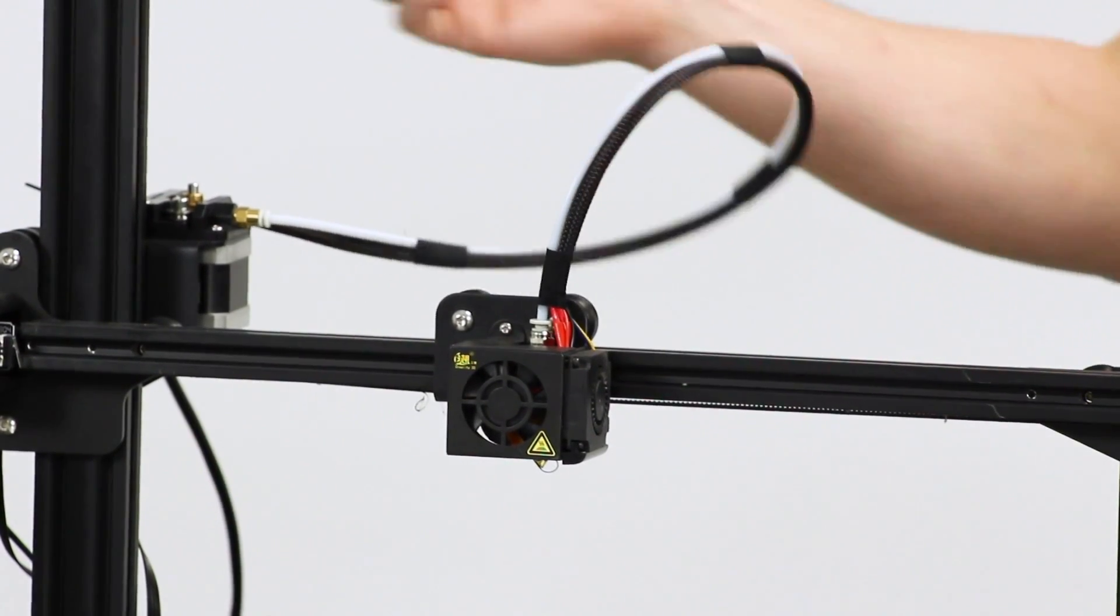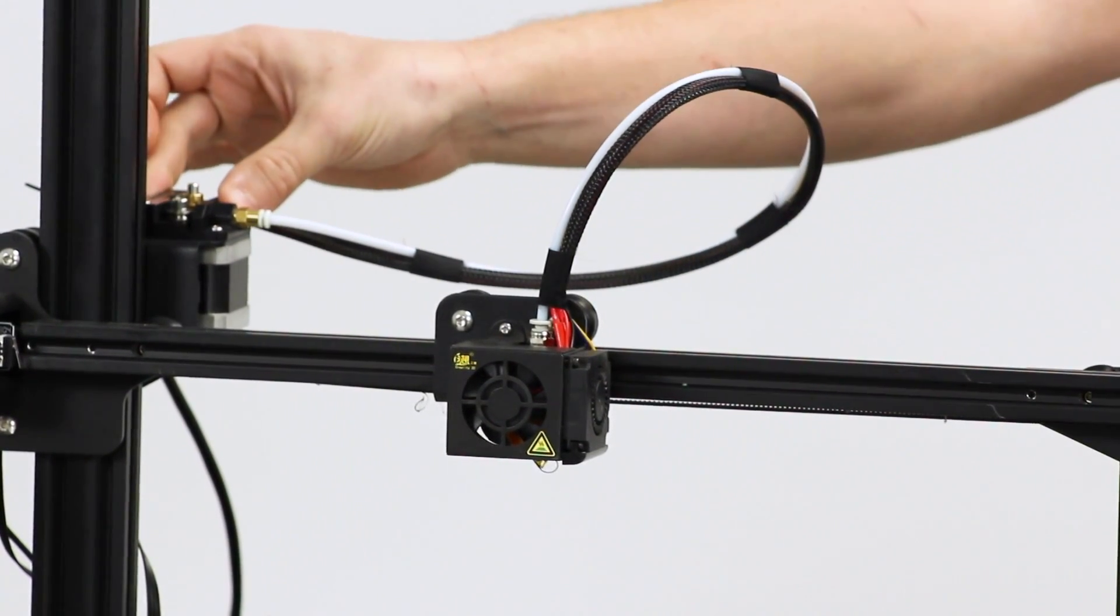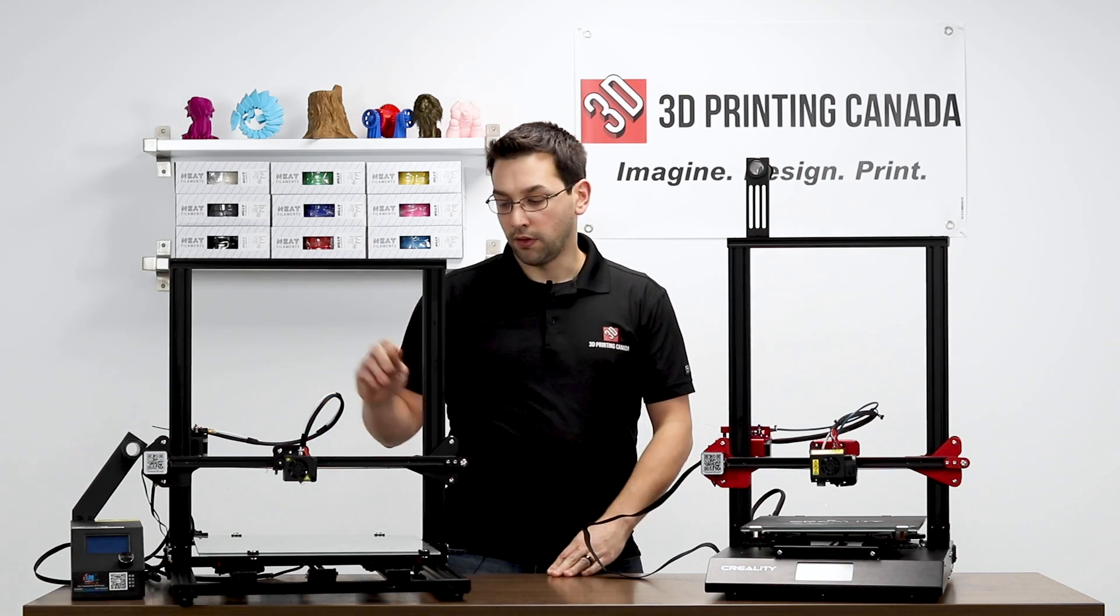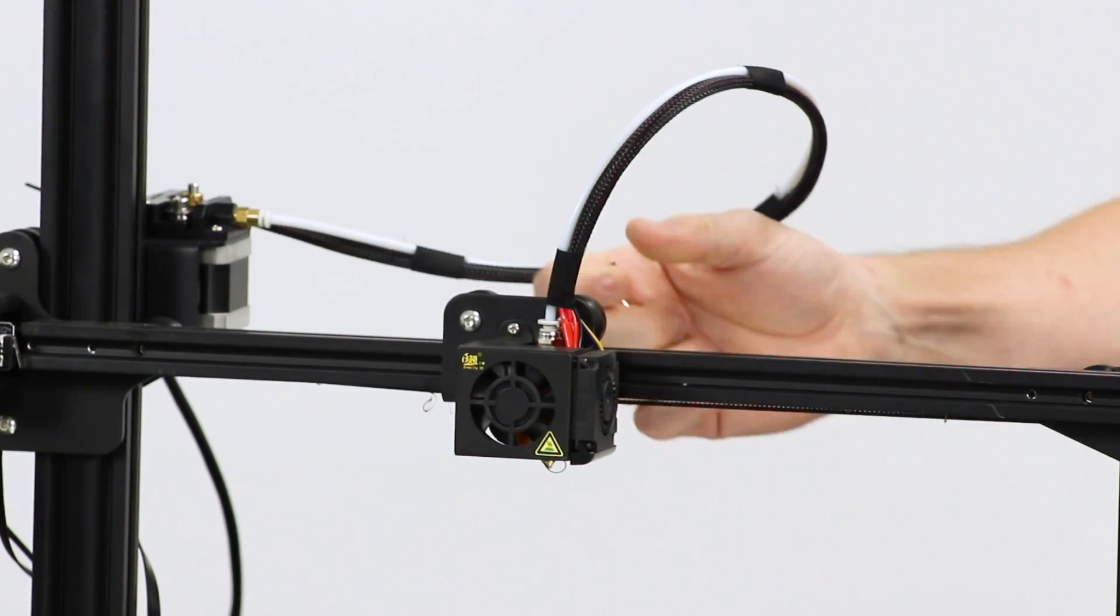So they're both Bowden systems. The extruder is on a little bracket on the right-hand side here. And the hotend runs on the 20-20 rail.